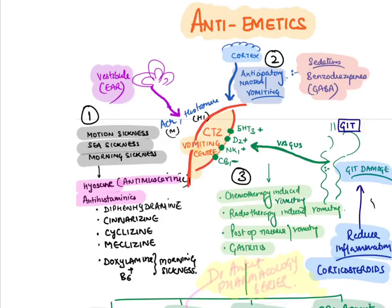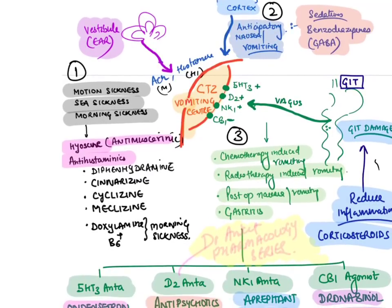We block muscarinic and histaminic receptors for motion/sea/morning sickness. Anti-cholinergic drug: hyoscine (also known as scopolamine). Anti-histaminic drugs: diphenhydramine, cinnarizine, cyclizine, meclizine. For morning sickness: doxylamine and B6. If there is a psychological component or anticipatory nausea and vomiting, we give sedative drugs like benzodiazepines.